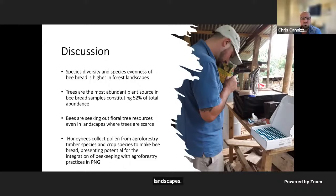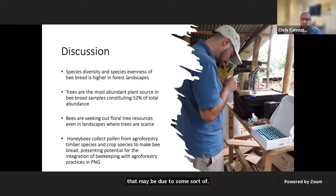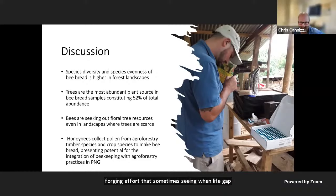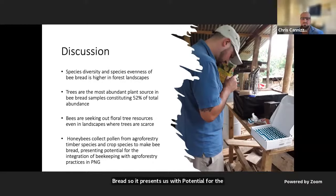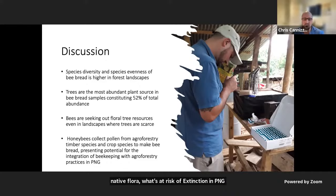Interestingly, herbaceous plant taxa pollen was higher in forests compared to non-forest landscapes. We hypothesize this may be due to a dilution effect of foraging effort sometimes seen when light gap phases emerge in closed canopy environments, as well as edge effects from forest boundaries. We also found honeybees collect pollen from agroforestry timber species and crop species to make bee bread, presenting potential for the integration of beekeeping with agroforestry practices and conservation of native flora at risk of extinction in PNG.